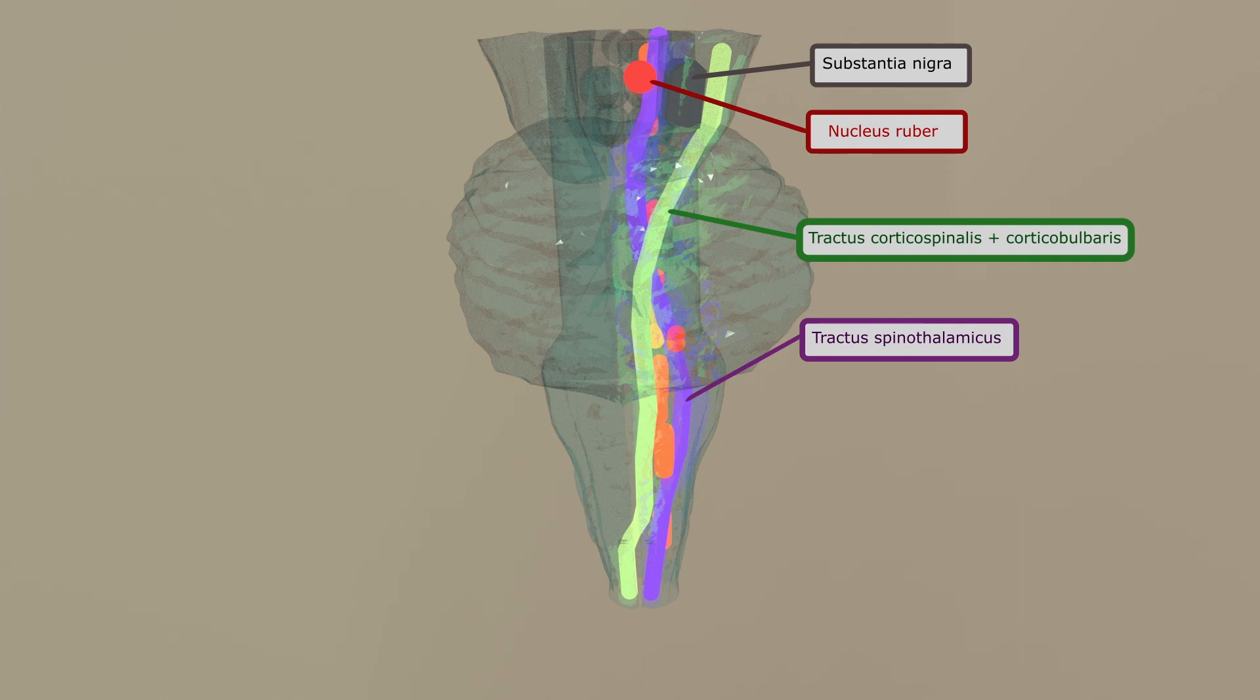What's important to mention is that the tractus corticospinalis will have its decusation at the level of the medulla oblongata. That means it will cross over to the other side, as you can see in the model.